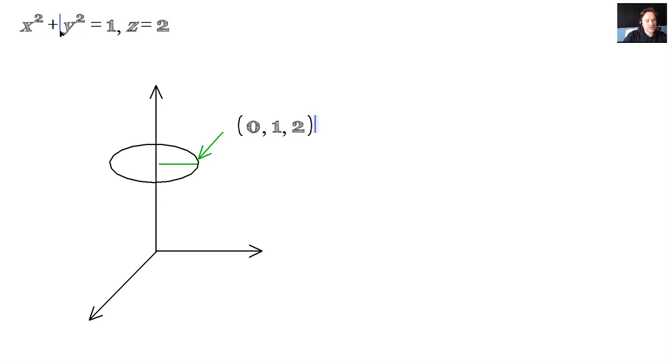It makes the first equation true, and it makes the second one z equals 2 also true. 0 squared plus 1 squared is 1, checks. 2 equals 2, checks.